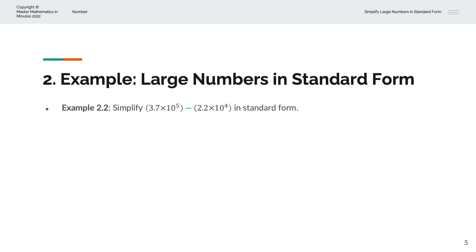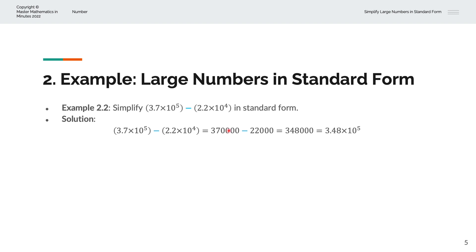In the second example, we're asked to simplify 3.7 times 10 to the power of 5 minus 2.2 times 10 to the power of 4 in standard form. We have 370,000 minus 22,000, which equals 348,000. Rewriting in standard form gives 3.48 times 10 to the power of 5. Here 3.48 is between 1 and 10, and 5 is a positive integer, so this is in standard form as required.